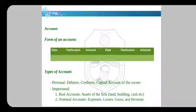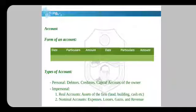There are a few types of accounts. First is personal account, which includes debitors, creditors, and the capital account of the owner. Then there are real accounts, which are impersonal accounts representing the assets of the firm — for example, land, building, cash, etc. Second is the nominal account, which includes expenses, losses, gains, and revenues. Personal and real accounts show the same balance at the end, while nominal accounts show losses and gains — so your money in the account will increase or decrease.